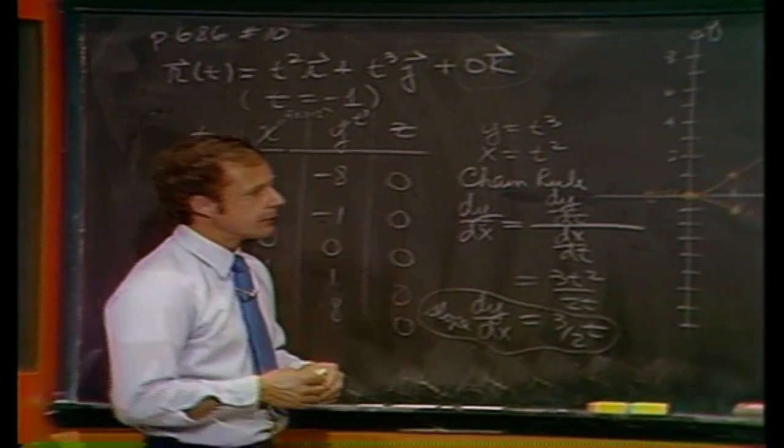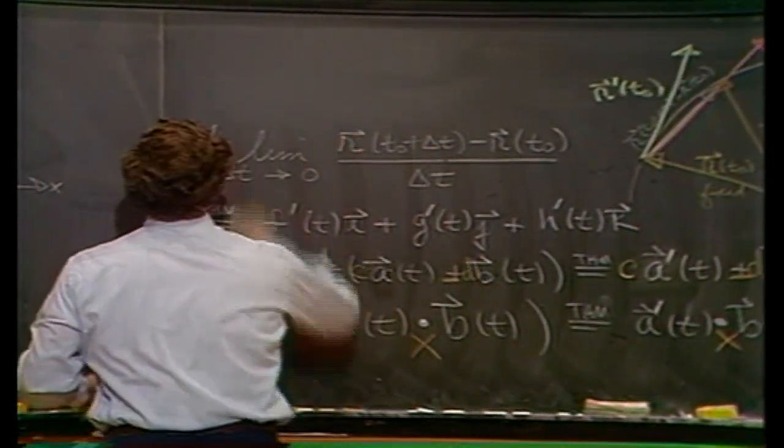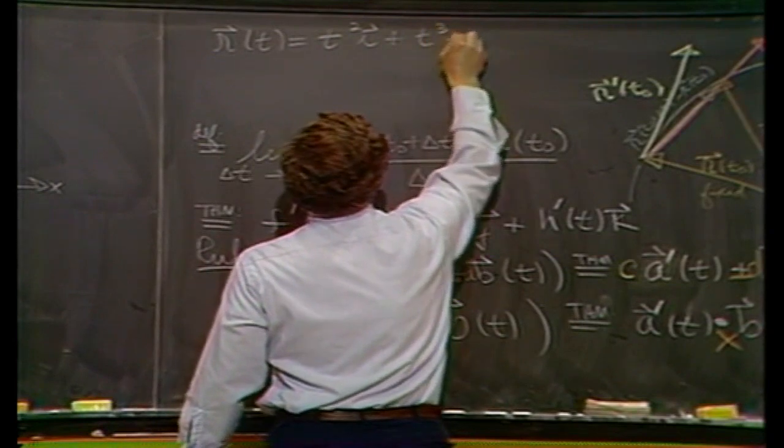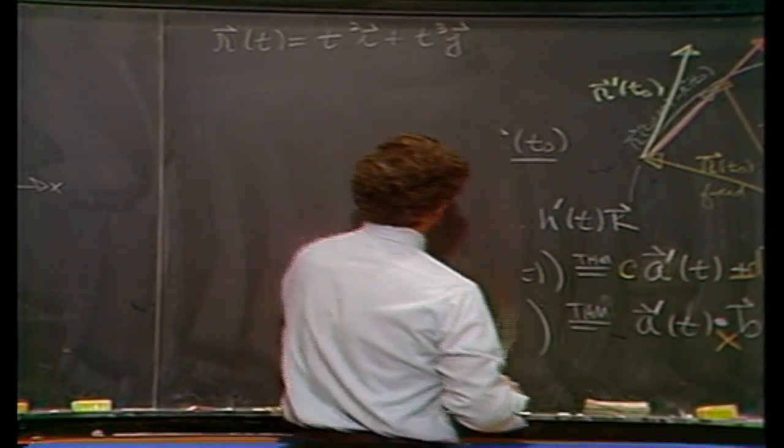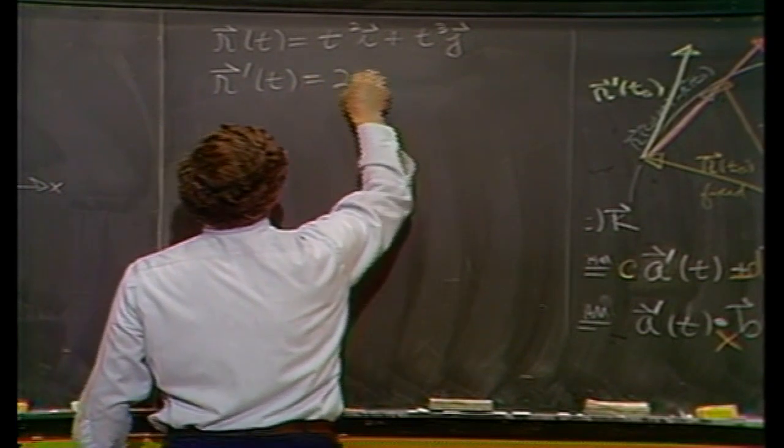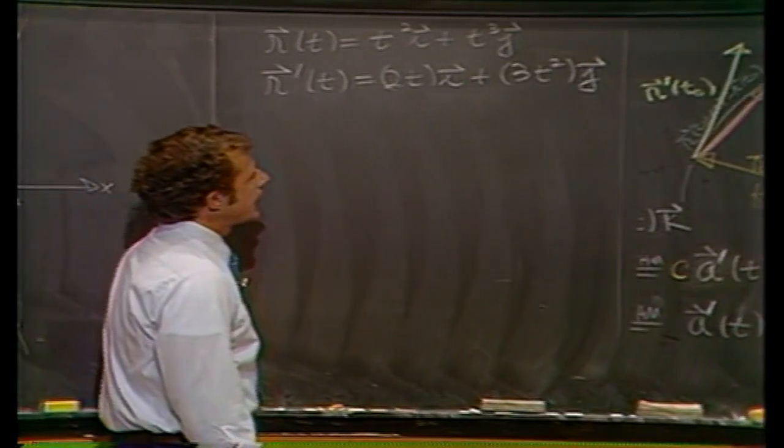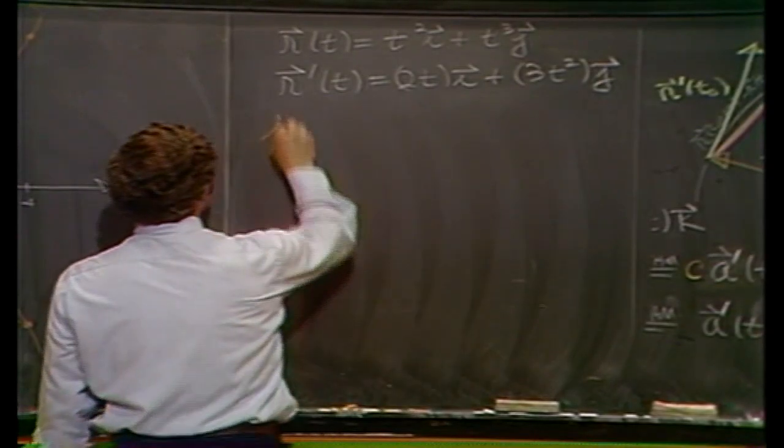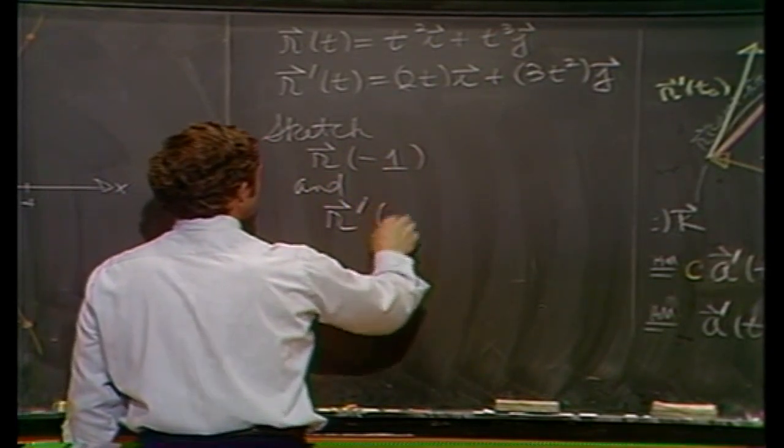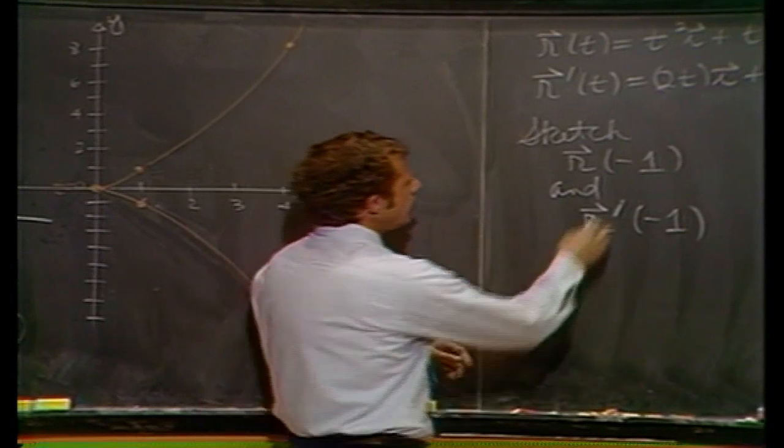Next part is to look at the derivative. We found the derivative. You can take it by just taking derivatives of the components. Fantastic. That means that in this simple case, the derivative function will be 2ti plus 3t squared j. Now, they're not asking you to do a lot of graphing. Basically, they're saying, now sketch in the vector r at minus one and the vector r prime at minus one. I want you to do at least that particular pair at that particular time.